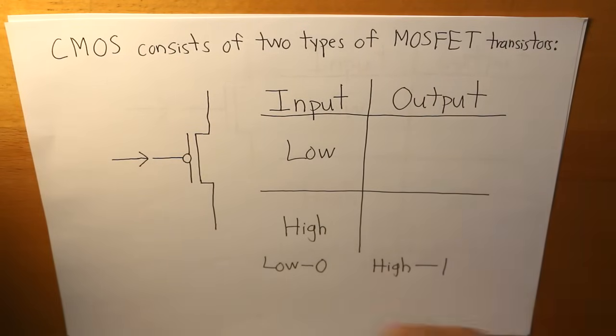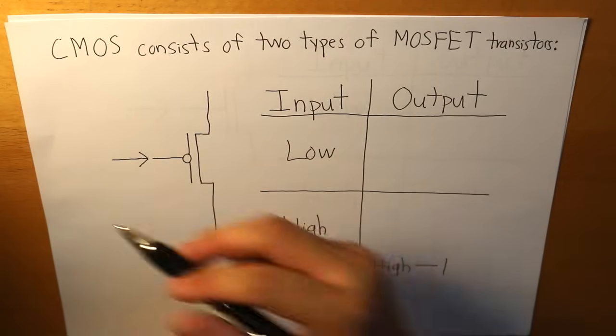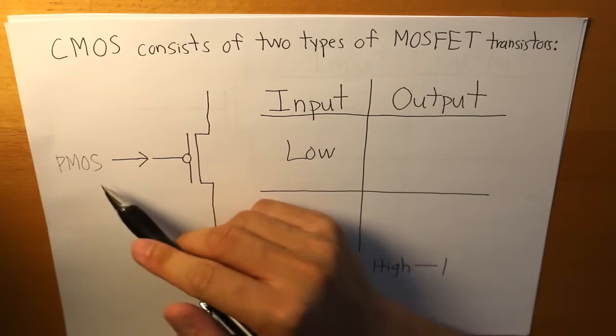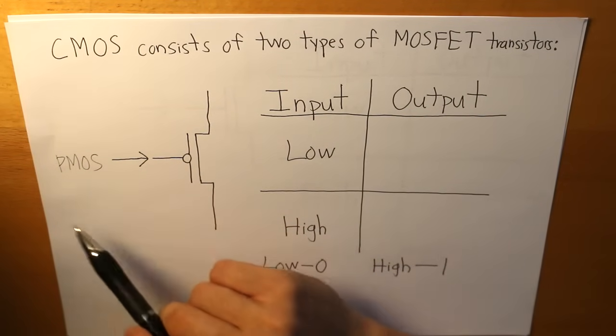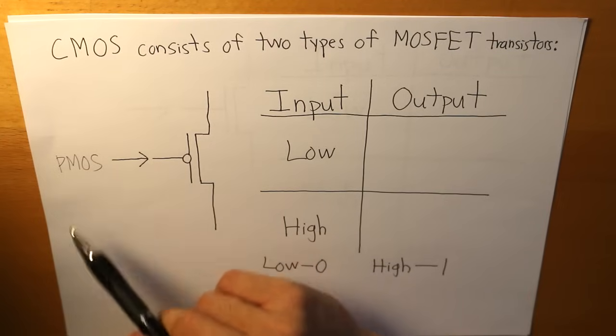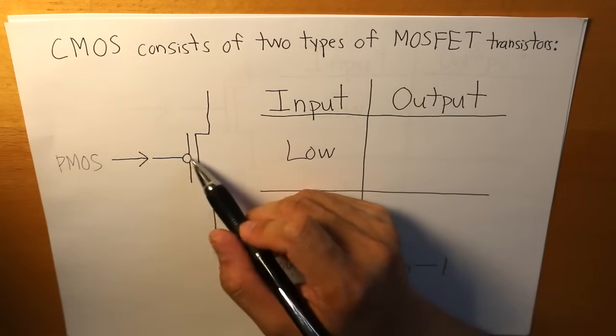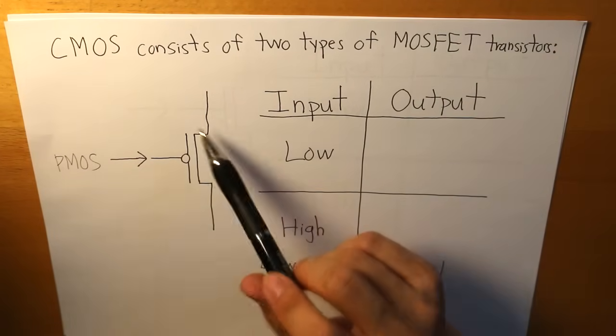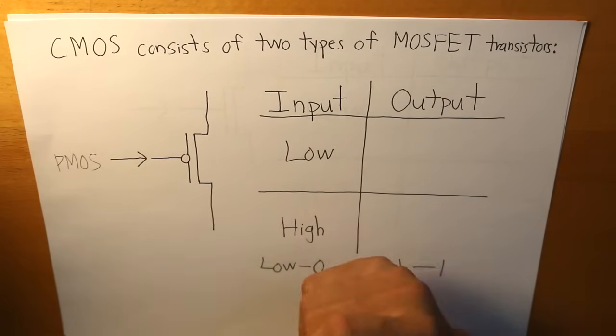So the first one here is a PMOS. The MOS stands for MOSFET and the P essentially stands for hole concentrated, and that hole is basically this hole right here. The basic function of this PMOS transistor...